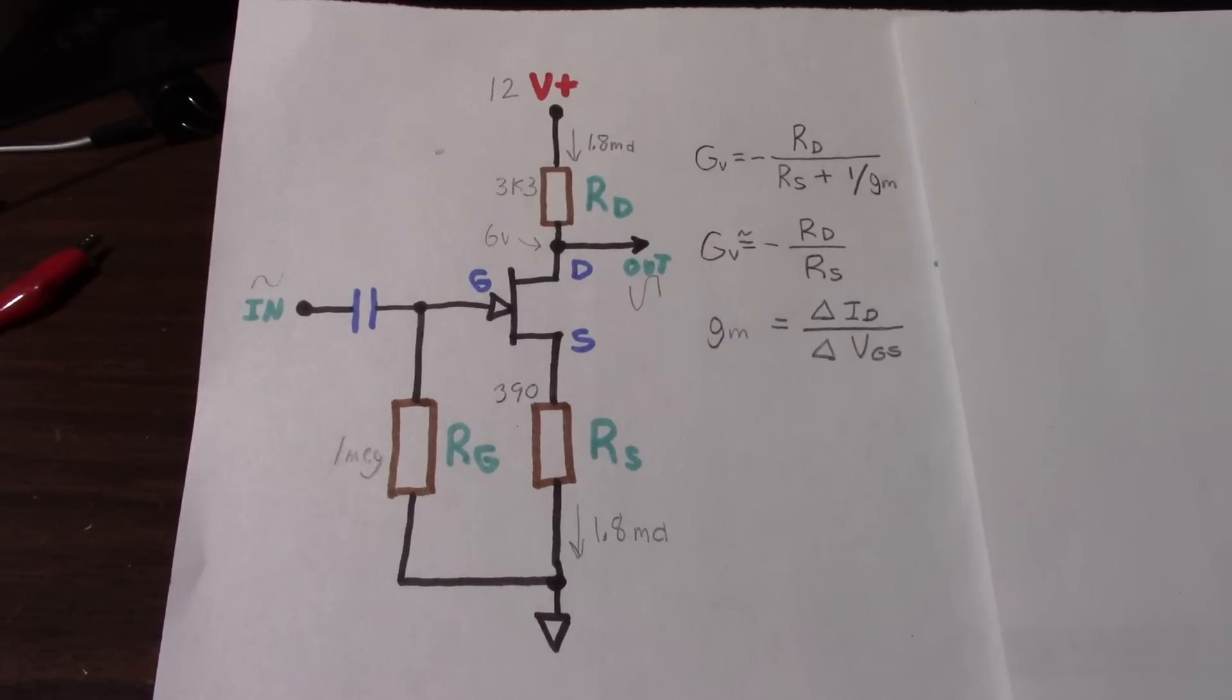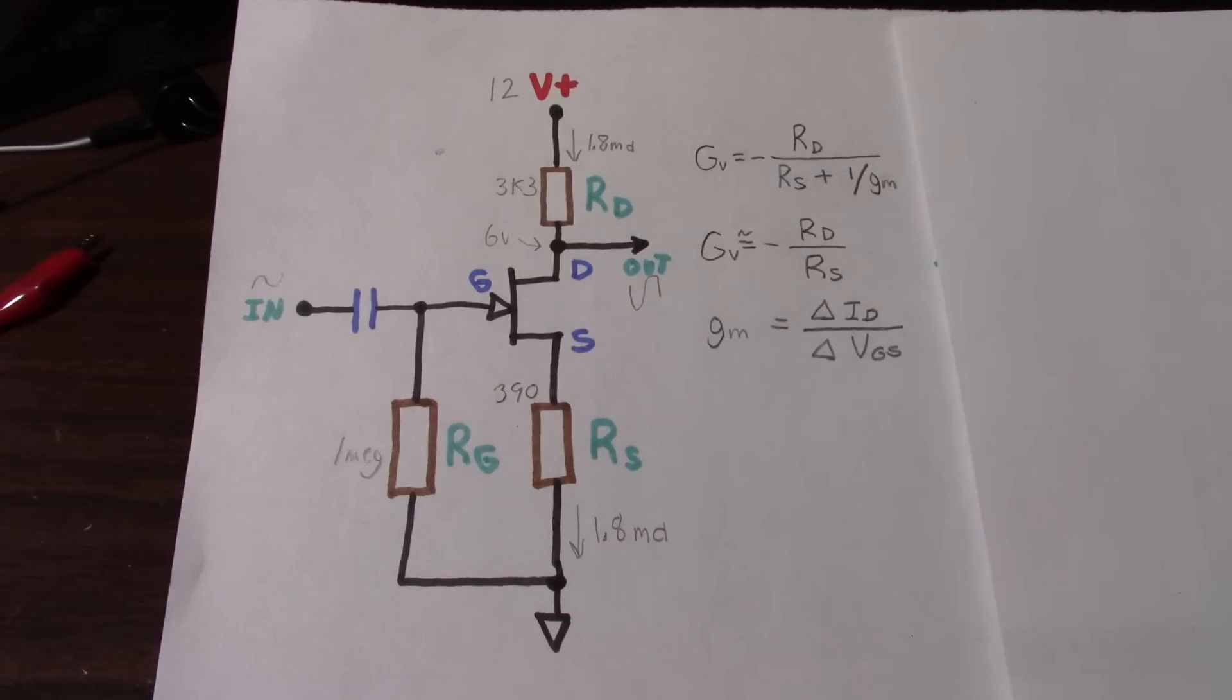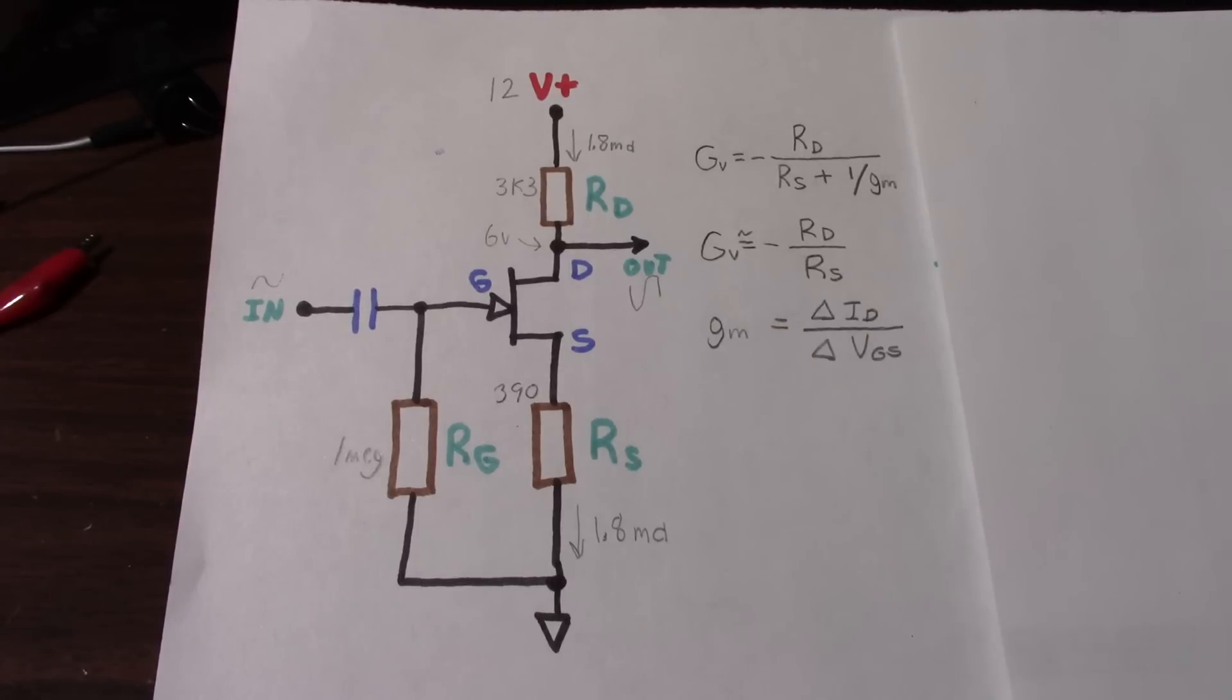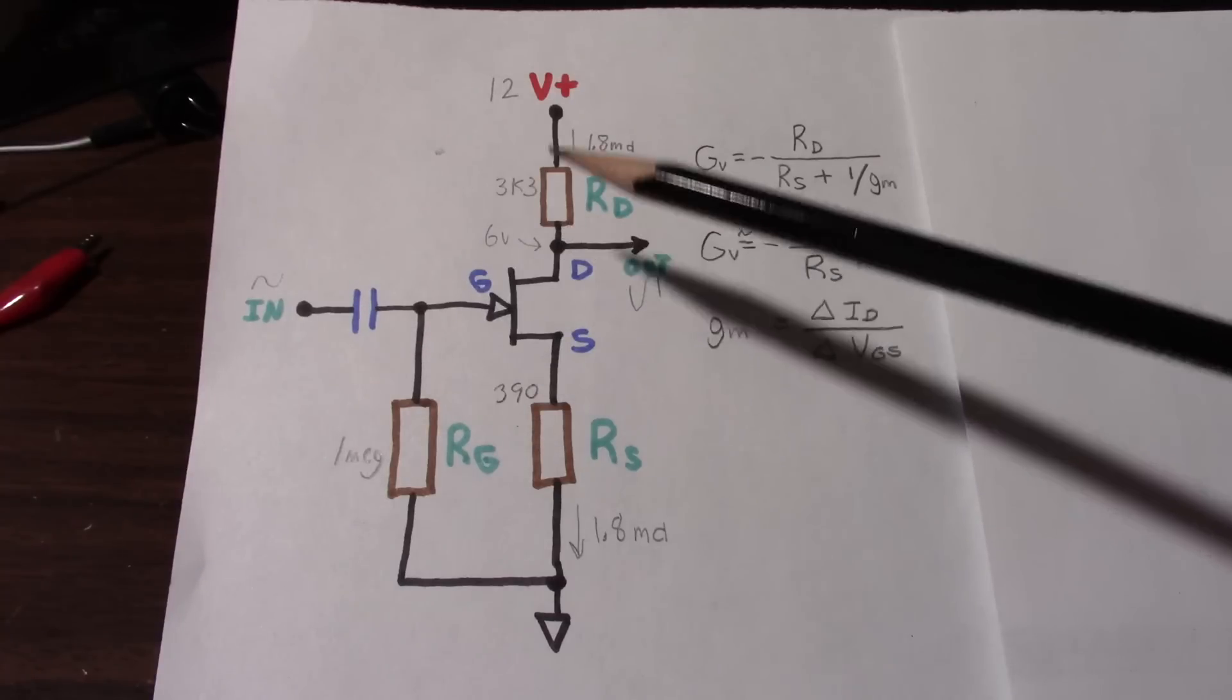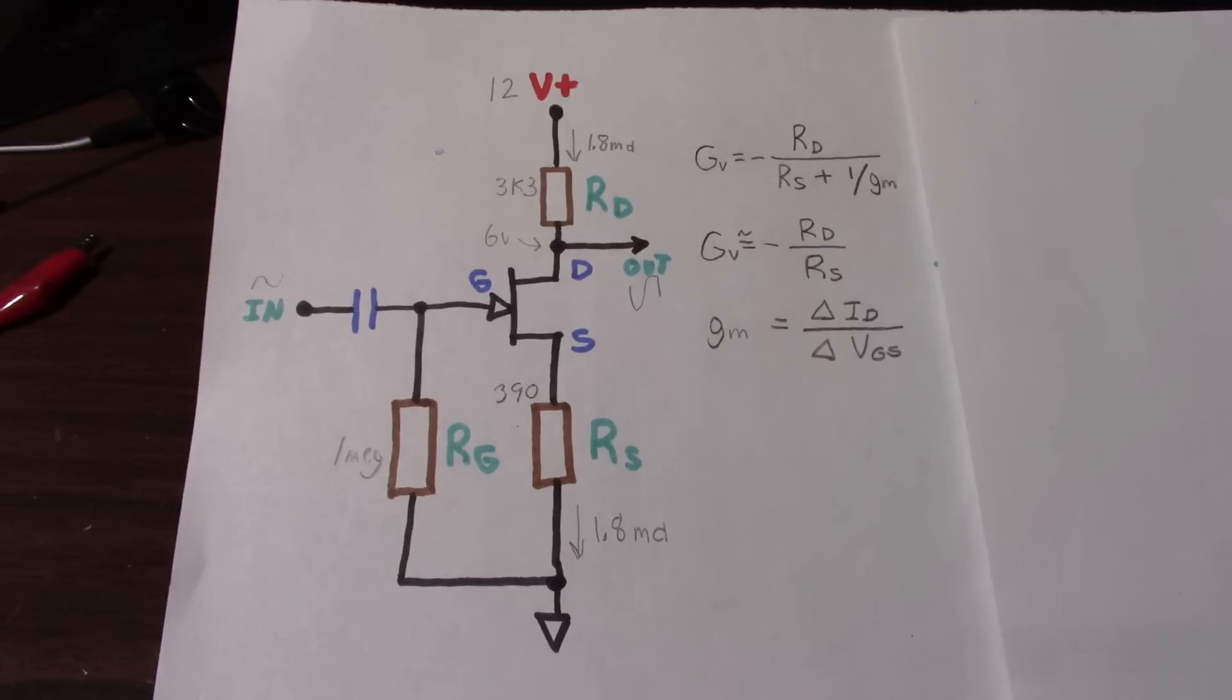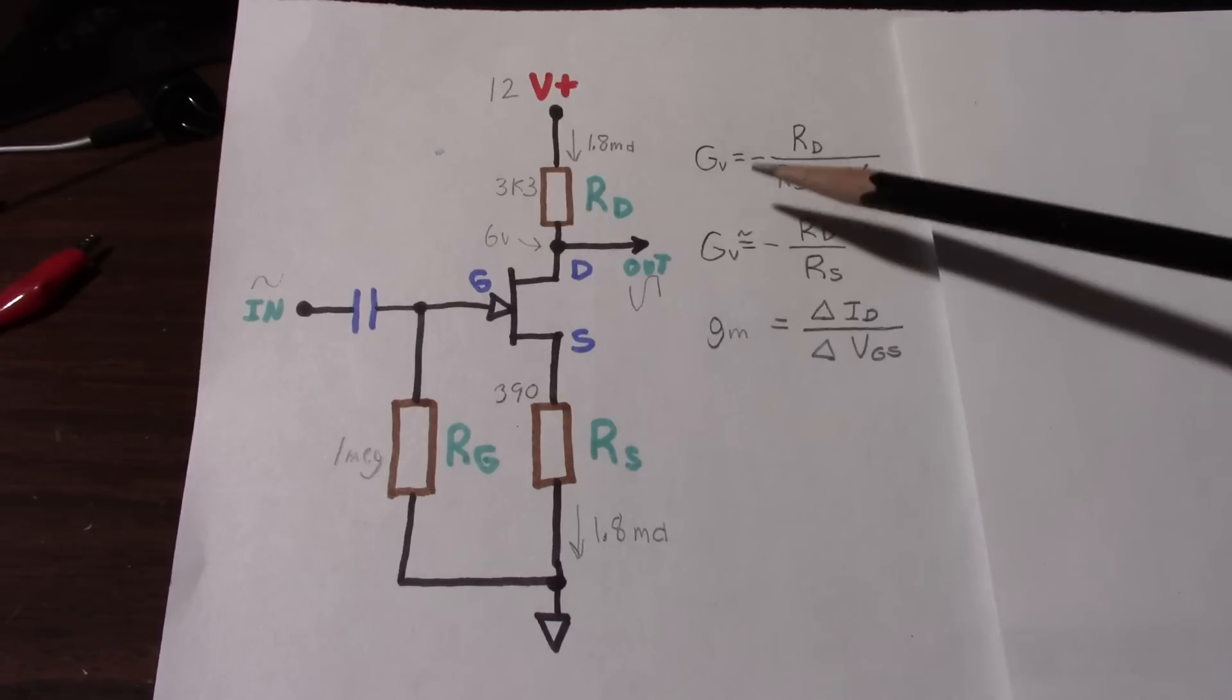Now, with the bipolar junction transistor, I was ignoring that a little bit of additional base current and the intrinsic emitter resistance, which is 26 ohms per milliamp, an inverse relationship. Because the emitter resistor was so much larger than that, in order of magnitude larger, I just ignored it to simplify the equation. Now, keep in mind that this is inverted. The signal will be inverted from your input signal. So there's a negative sign there. Now, a much closer estimate of the gain would be RD over RS plus 1 over the transconductance, which is G sub M.